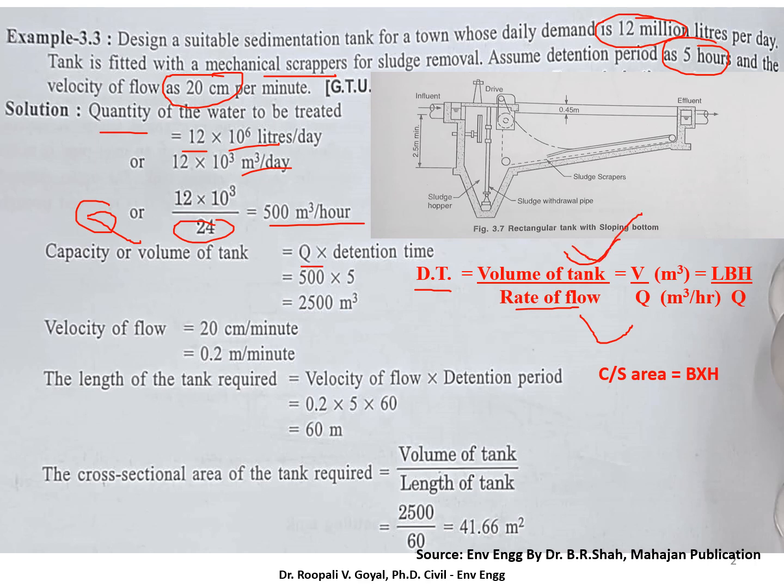So volume of tank is Q into detention time. So Q is in meter cube per hour, 5 hours is your detention time. So you will get 2500 meter cube as volume. Now we have the volume and we have horizontal velocity.